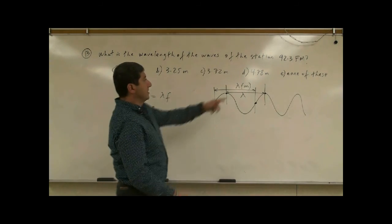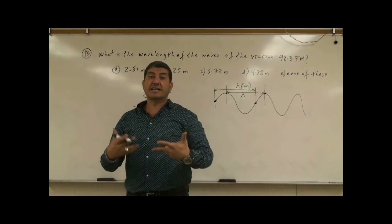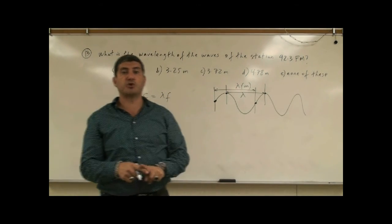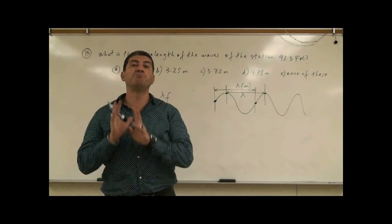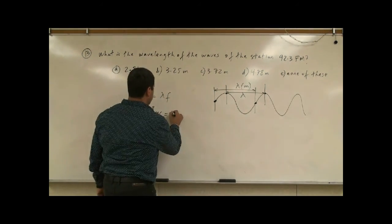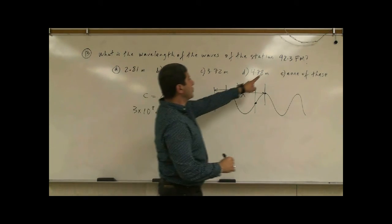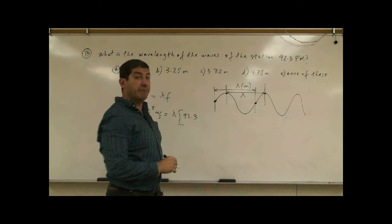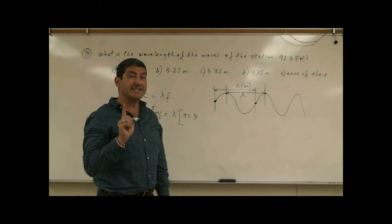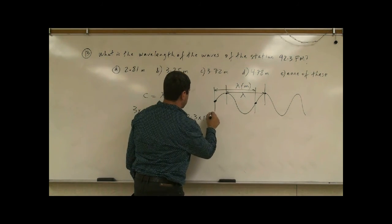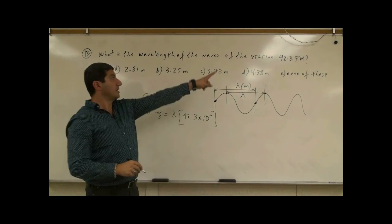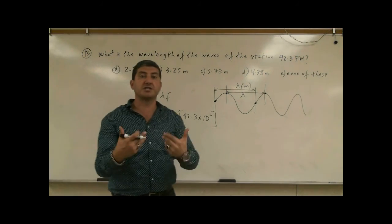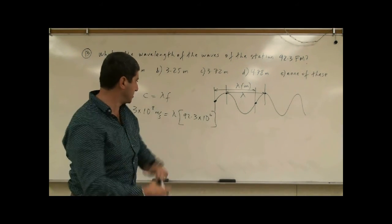So in this case, what's given? The 92.3 FM, that's actually the frequency of that radio station. FM stations are broadcast in units of megahertz, million hertz. So the wavelength, we don't know. Its frequency is 92.3. FM is megahertz, so that would be what? Million hertz. So times 10 to the sixth hertz. So as soon as you see FM, just put 10 to the power of six, because 10 to the power of six is a mega, a million, a million hertz.